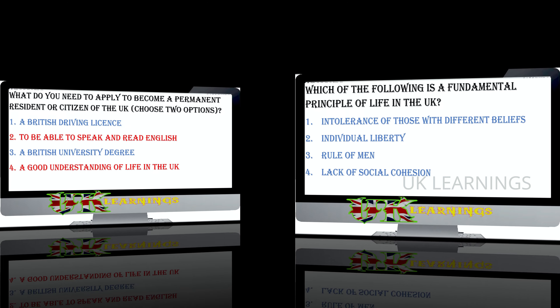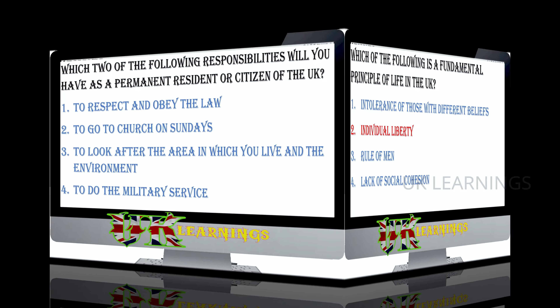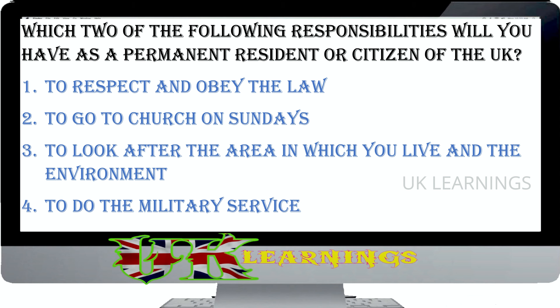Which of the following is a fundamental principle of life in the UK? Intolerance of those with different beliefs, individual liberty, rule of men, lack of social cohesion. The correct answer is individual liberty. The fundamental principles of British life include democracy, the rule of law, individual liberty, tolerance of those with different faiths and beliefs, and participation in community life.